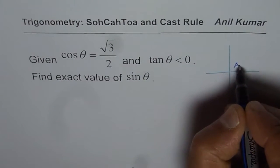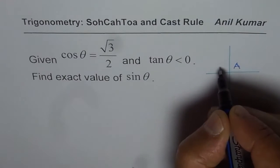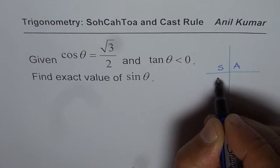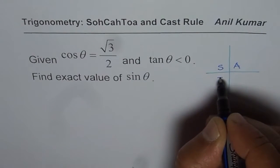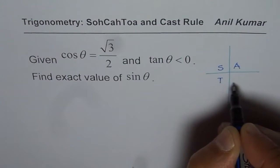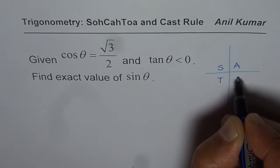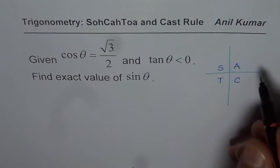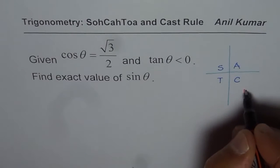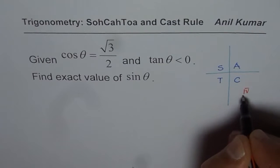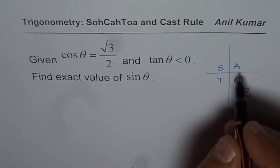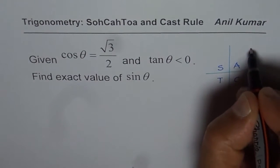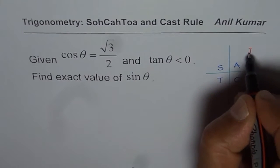All ratios are positive in quadrant one, sine is positive in quadrant two, tan is positive in quadrant three, and cosine is positive in quadrant four. We normally start from quadrant four to spell out CAST — that is how you get the CAST rule.